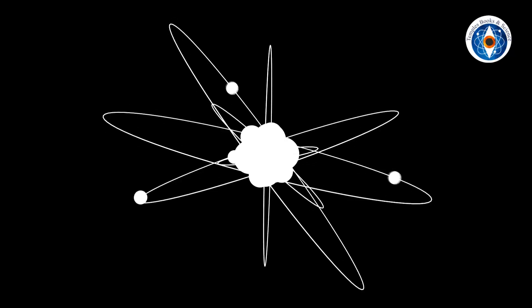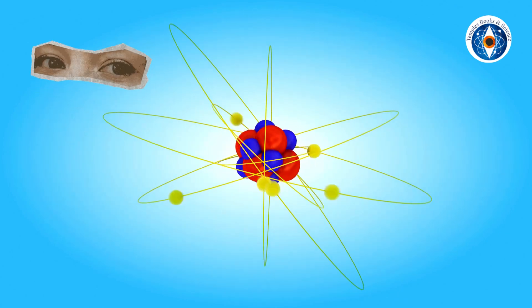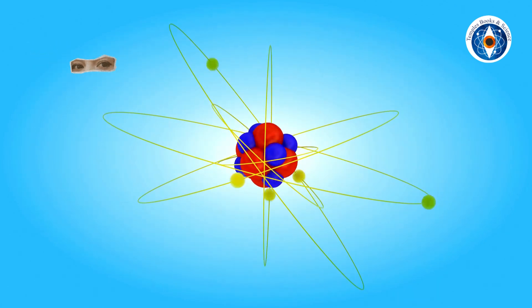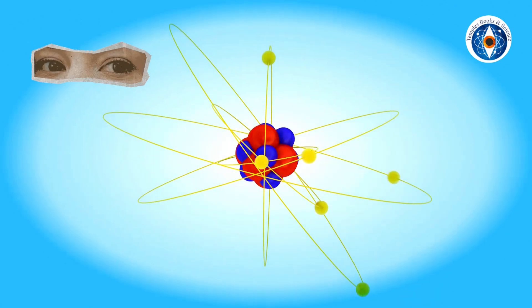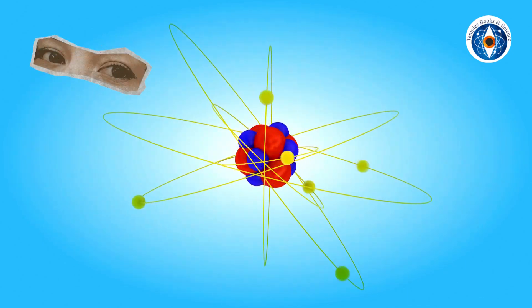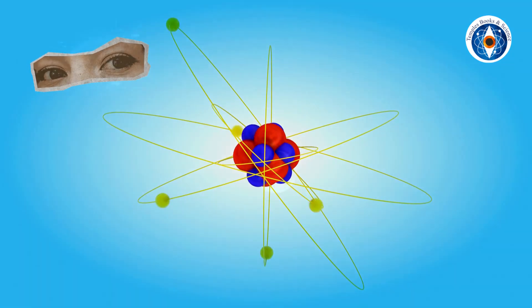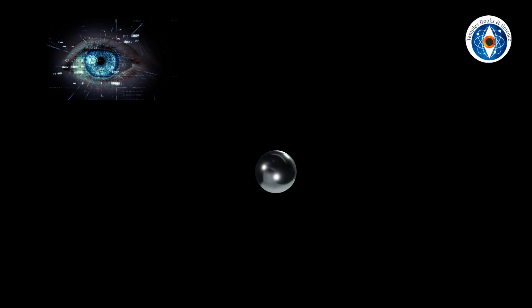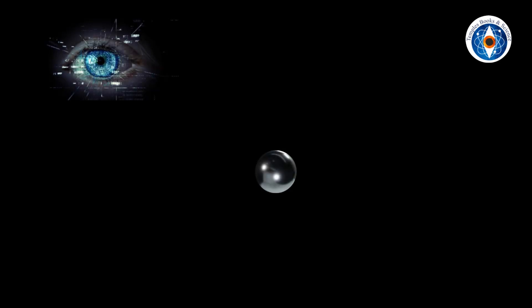And location. Quantum physics says that none of these properties exist until someone like you and me attempts to measure these properties. Say for example you spot an electron in a location - that electron did not exist at all until you tried to look at it. It is your observation that causes the electron to acquire a shape, size, and location. It is your observation that brought it into existence.